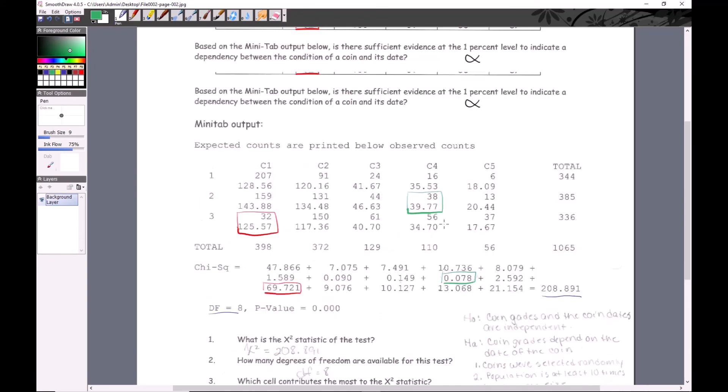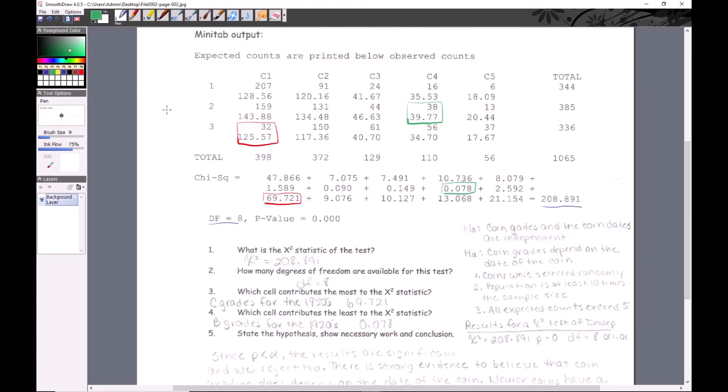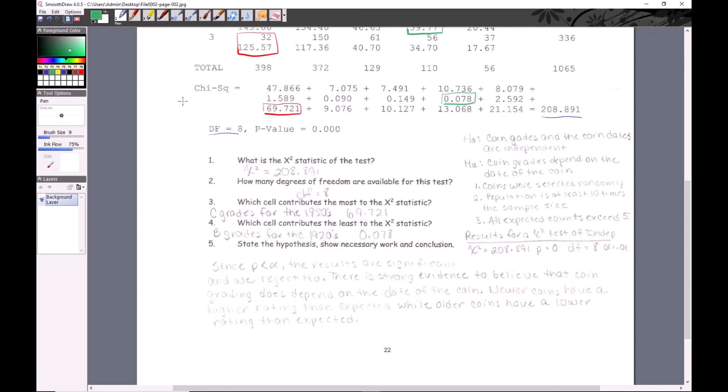Here they all are. We're supposed to indicate a dependency - that's a chi-square test of independence. It makes sense because it looks to be one sample that they separated out by decade and coin grade. You can pause here and copy this down. The p-value - computers don't mess around. They're not going to give you little bitty numbers times 10 to the whatever. They're just going to say zero. We've got practically no possibility of avoiding rejecting H0, so we're going to do it. P is way less than alpha, so you have strong evidence to believe that coin grading does depend on the date of the coin.